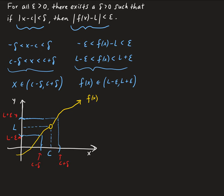If we look at an x value that lies inside the delta neighborhood, and we evaluate the function at that x, we can see that the result is going to lie inside the epsilon neighborhood — inside the neighborhood corresponding to epsilon. So no matter how small this delta neighborhood is, there will always be an x inside there, and evaluating f of x gives a value inside the epsilon neighborhood.